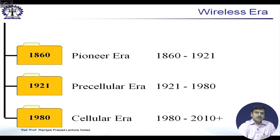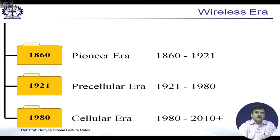The pioneering era spans from 1860, when Maxwell derived the equations, to 1921, when there were first experiments of electromagnetic wave propagation. The precellular era covers 1921 to 1980, during which there was commercial deployment of EM wave propagation into what is known today as mobile communications. After mobile communications were proven to be successful, we move into the third era, which we call the cellular era.